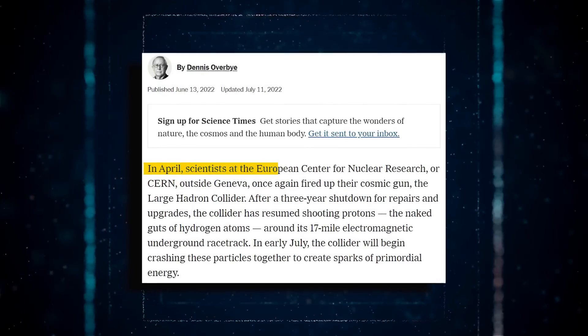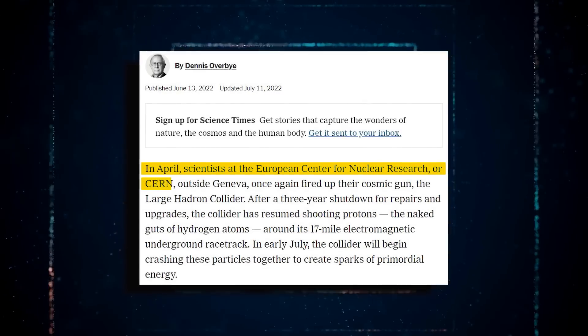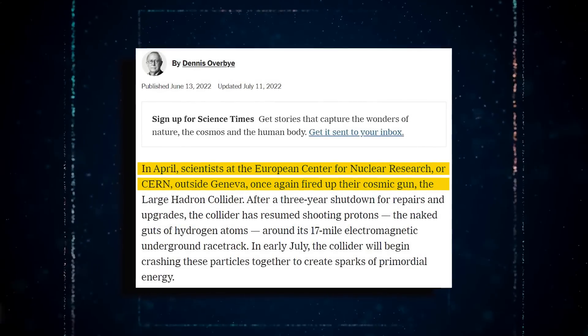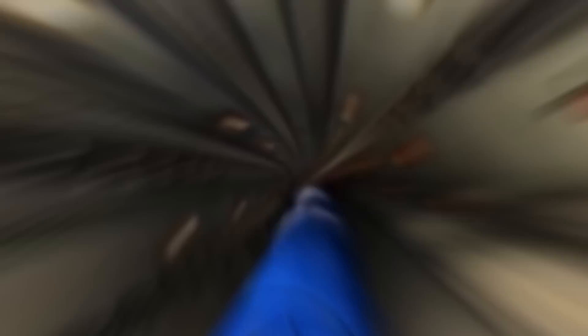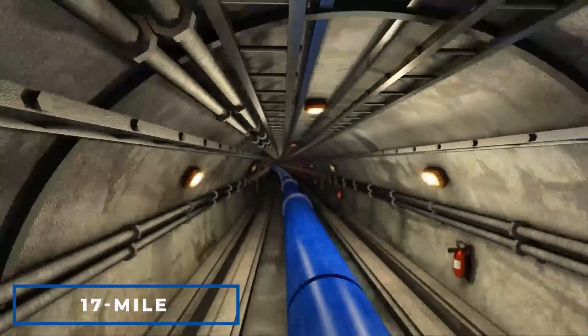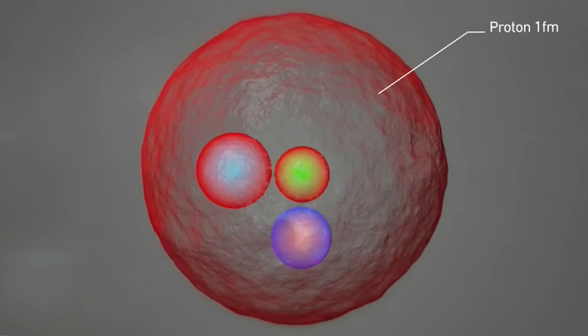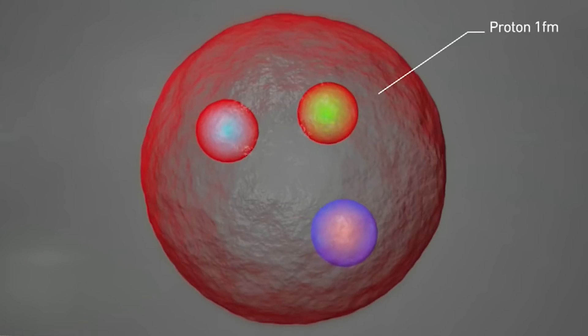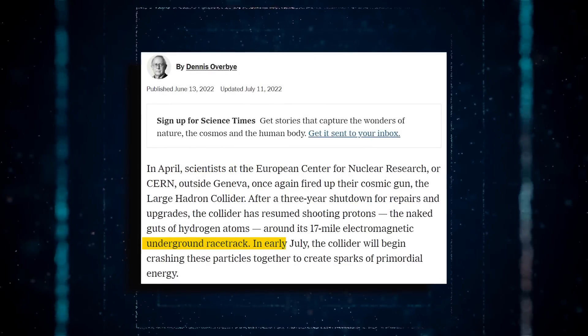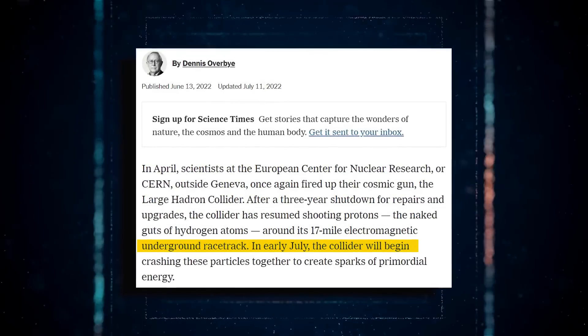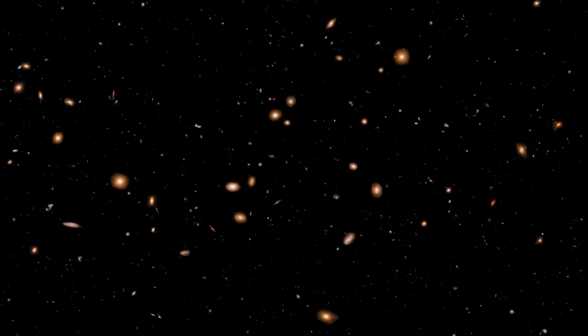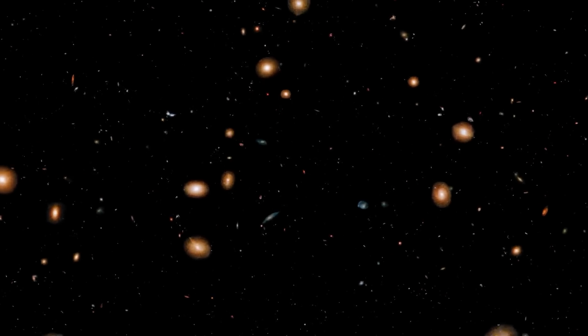Scientists at the European Centre for Nuclear Research fired up their cosmic gun the Large Hadron Collider once more in April. The collider has begun blasting protons the bare guts of hydrogen atoms along its 17-mile electromagnetic subterranean track after a three-year halt for maintenance and improvements. The collider began crashing these particles together in early July creating sparks of primal energy. So the great game of searching for the mystery of the cosmos has resumed amidst new advances and renewed optimism among particle physicists.